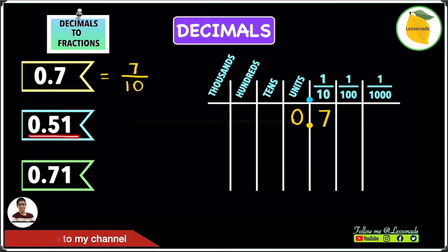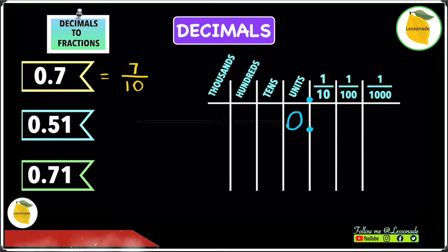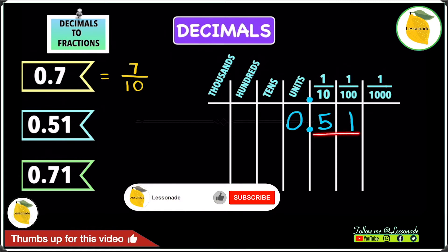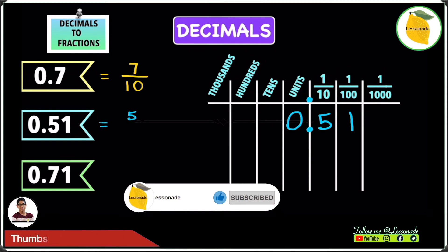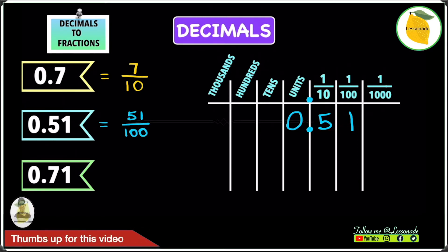Let's have a look at the next example, which is 0.51. We're going to do the same thing as before — start by aligning the decimal point with the decimal point in the place value table. Write the decimal point first, then write the 0 in front, and after the decimal point write 5 and then 1 in the next column. The numerator is the number after the decimal point, which is 51. For the denominator, we have 2 digits after the decimal point, and 2 digits after the decimal point is hundredths, so our denominator will be 100. Our answer is 51 over 100 for 0.51 converted as a fraction.